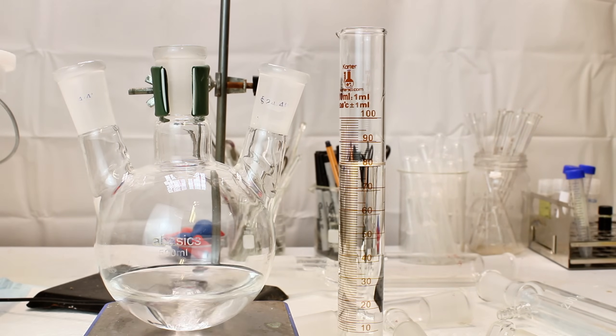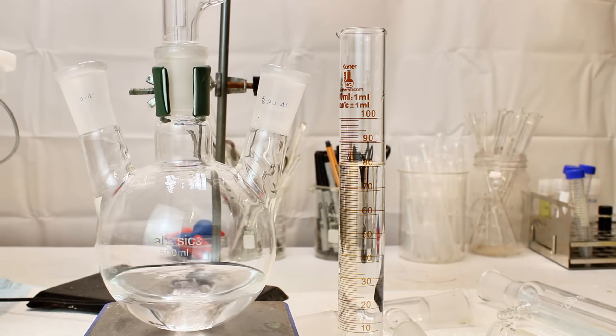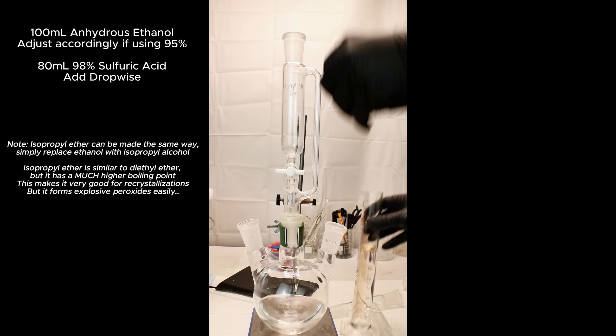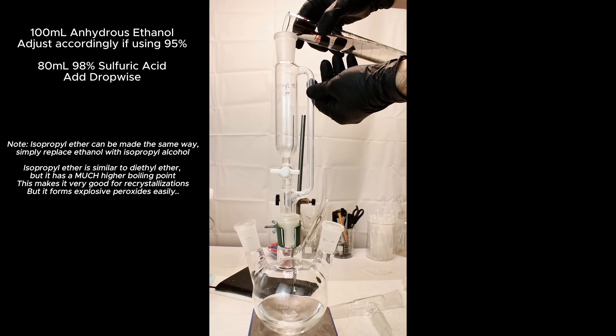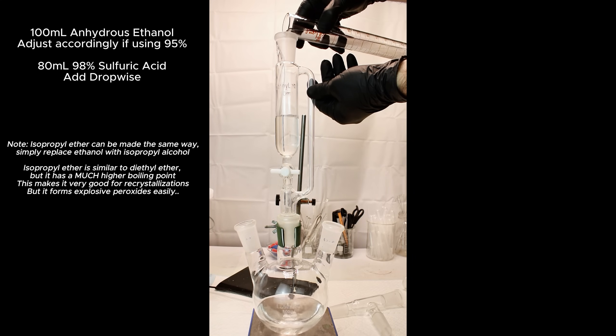My main use for diethyl ether is as a solvent, which I'll talk about later in the video. To get started, I add 100ml of anhydrous ethanol to a three-neck round bottom boiling flask along with a magnetic stir bar.